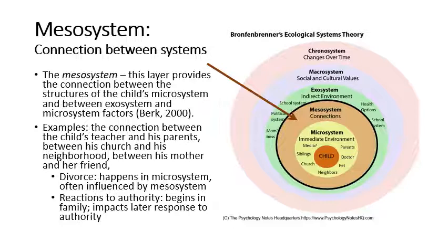Divorce happens within the microsystem — the two parents are both impacting the child — but the interaction between the parents is part of the mesosystem, because hopefully the child is not directly involved in the fighting. They're still impacted by these interactions between parents, or by a sibling getting into a lot of trouble. Maybe this child comes home to the sibling fighting with the parent and retreats into a private space, not feeling the comfort and love one might feel in the home.